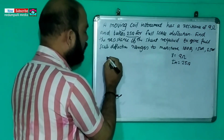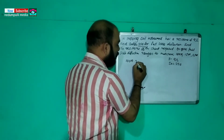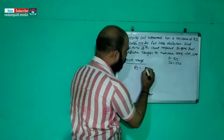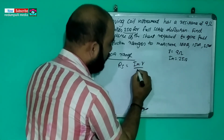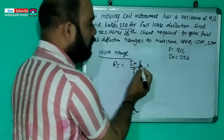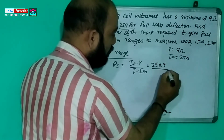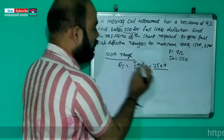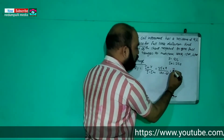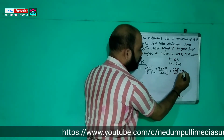For the 100 ampere range: 100 minus 25 equals 75; Rs equals 225 divided by 75, which equals 3 ohms.